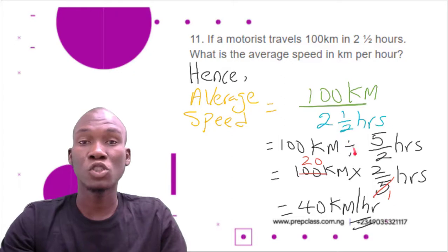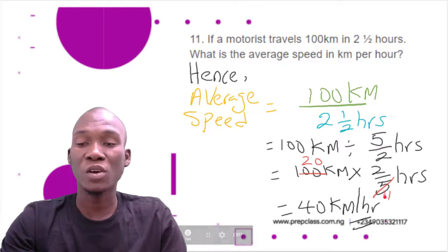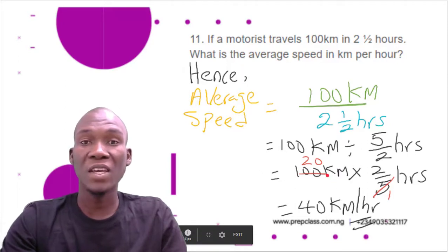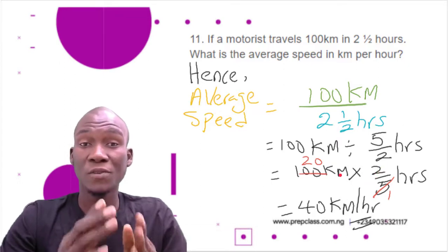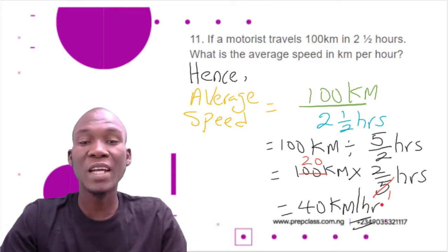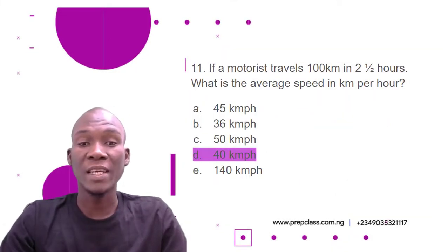Now we convert the division to multiplication. When division changes to multiplication, the fraction after the division sign will interchange — that is, the denominator becomes the numerator and the numerator becomes the denominator. At this point we can divide: 5 into 5 is 1, 5 into 100 is 20, so we have 20 multiplied by 2, giving us 40 kilometers per hour. So the average speed is 40 km/h and the correct option is option D.